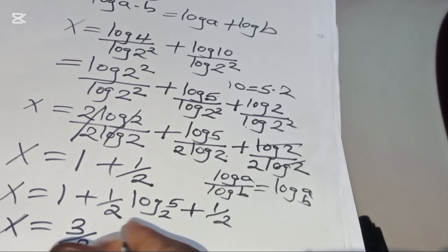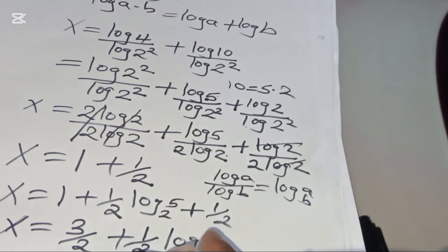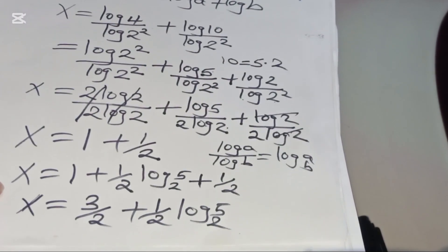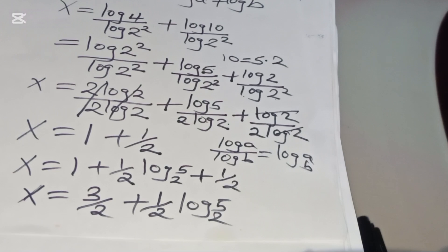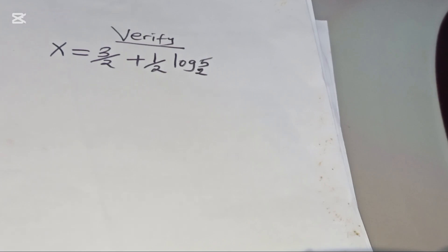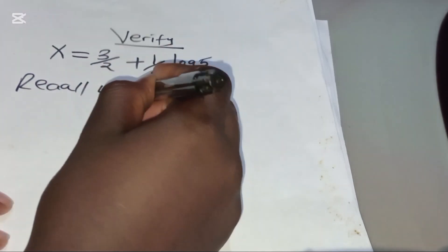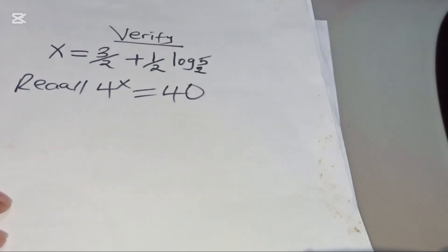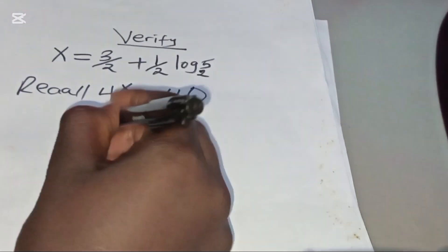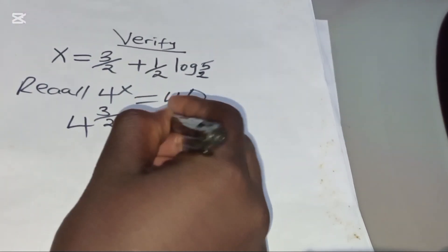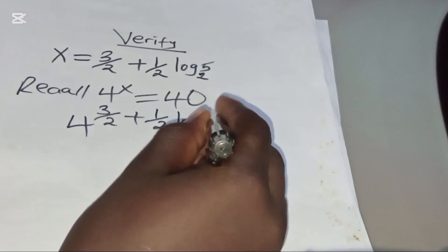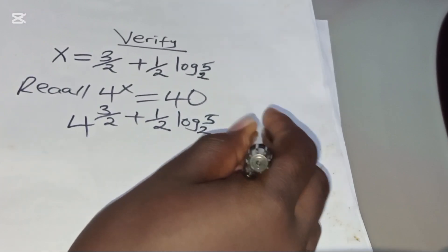Let's verify that x = 3/2 + ½·log₂(5) satisfies the equation. Recall that 4^x should equal 40. Substituting the value of x, we have 4 to the power (3/2 + ½·log₂(5)), and this is supposed to give us 40.